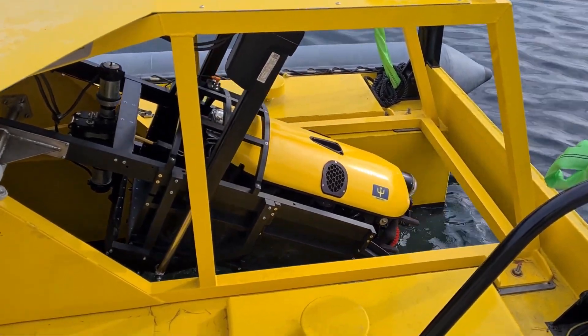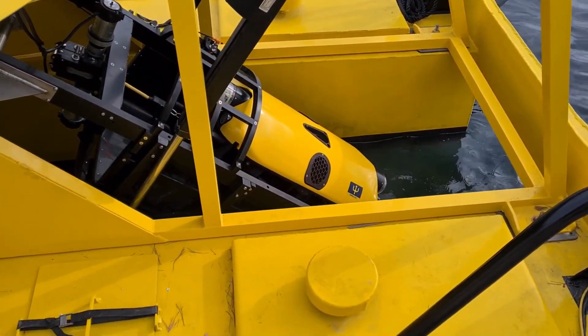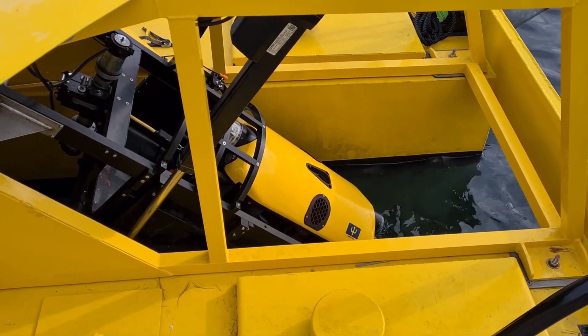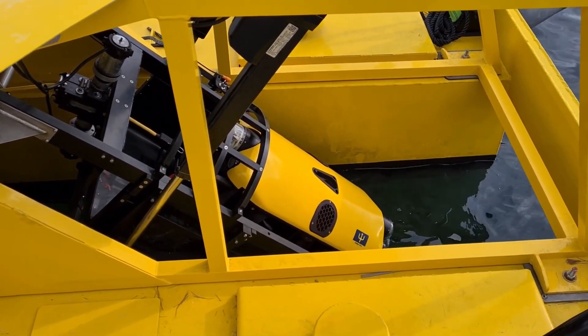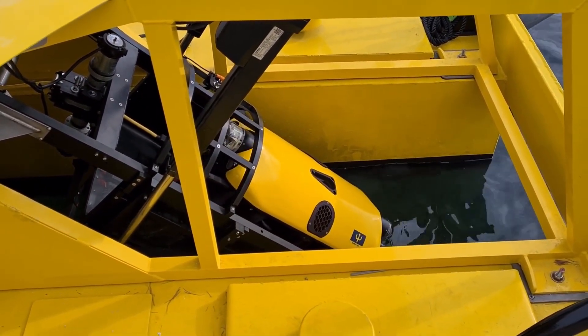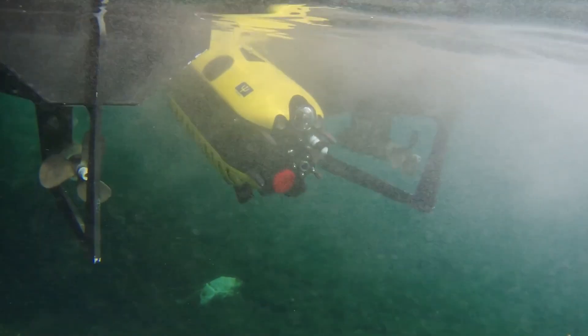The second underwater robot is an inspection class ROV Tortuga, able to operate in strong currents and to collect the debris on the sea floor with an embedded grabber.